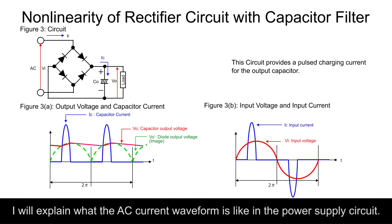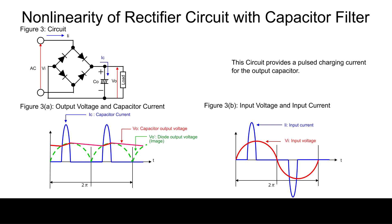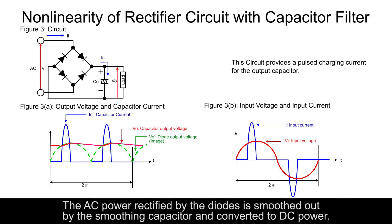I will explain what the AC current waveform is like in the power supply circuit. This circuit diagram shows the rectifier circuit with capacitor filter for the basic AC DC power supply. The AC power rectified by the diodes is smoothed out by the smoothing capacitor and converted to DC power.